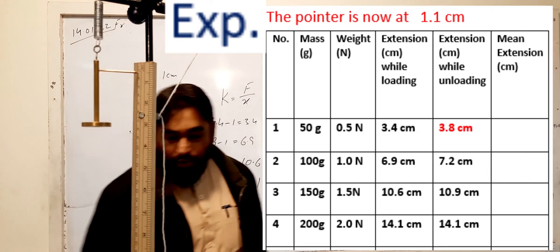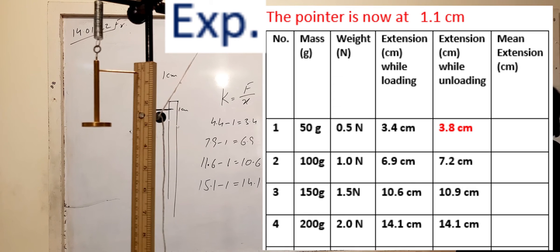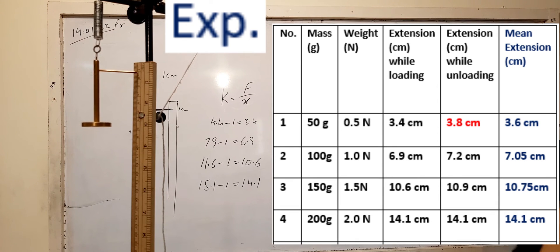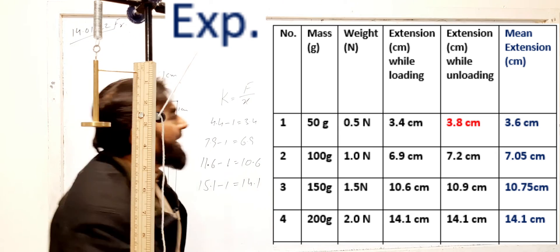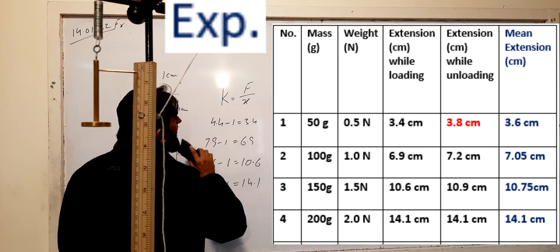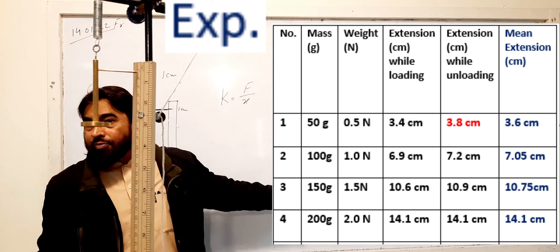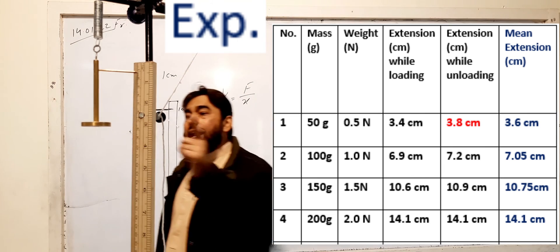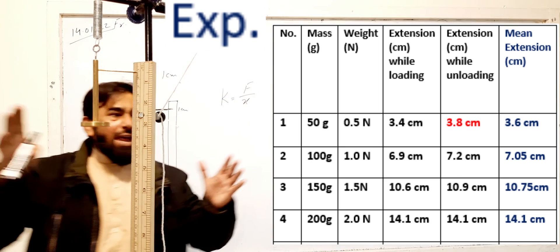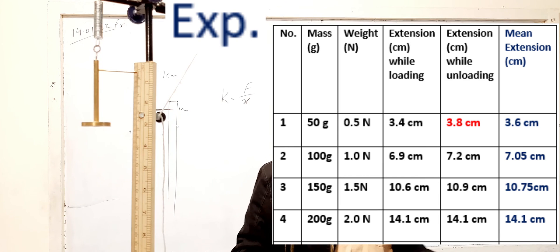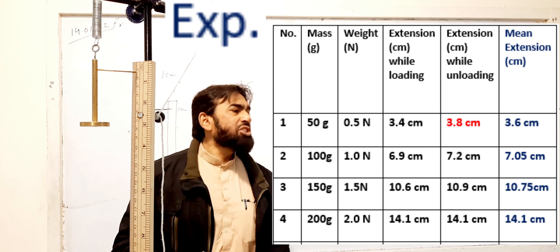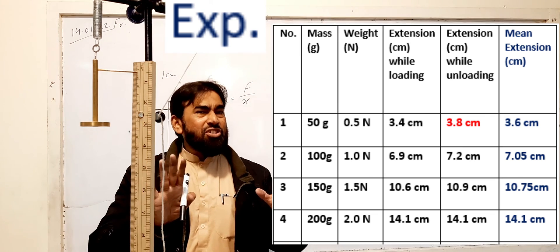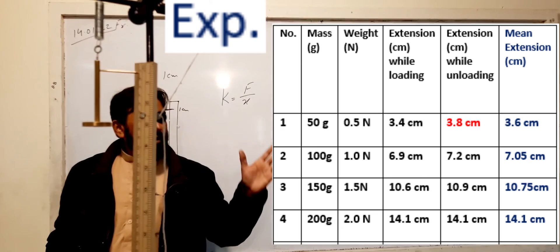Now we take the average of the loading and unloading extensions for each mass. For 50 grams: 3.4 plus 3.8 divided by 2. Use your calculators to find these averages — these are your extension values x. To find the force F, convert the masses from grams to kilograms. Remember that 100 grams equals 1 newton, because 1000 grams equals 10 newtons using g = 10 N/kg.